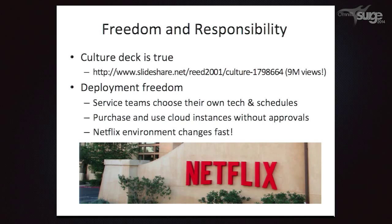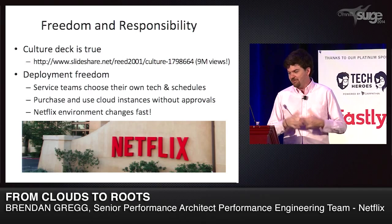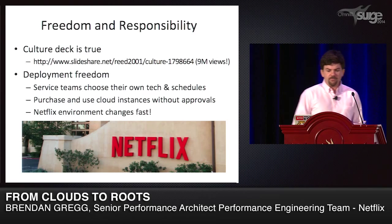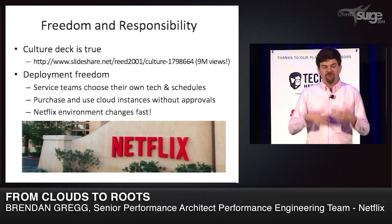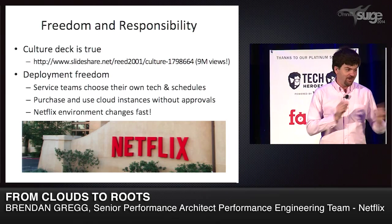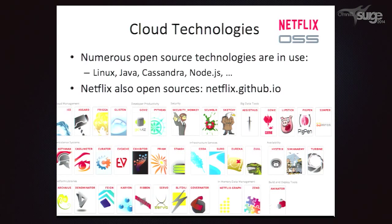Netflix has a very interesting culture. The culture deck has had over 9 million views, which is unusual for an HR product. Engineers have development freedom: service teams can choose their own tech and schedules, and can purchase and use cloud instances without approvals. The Netflix environment changes fast. You're never sure what a service team is deploying next, because they're free to do whatever they want so long as they're responsible when it breaks. Netflix is a large and growing company with lots of engineers, things change quickly. We use a lot of open-source technology and also develop a lot of it — netflix.github.io has tons of our internal software now available.